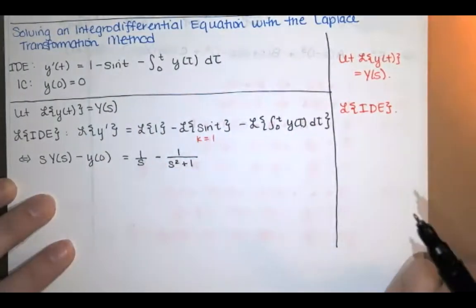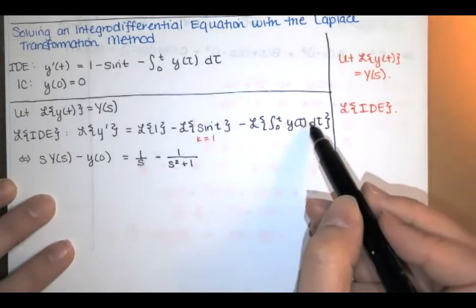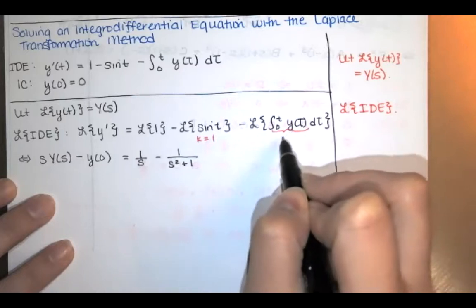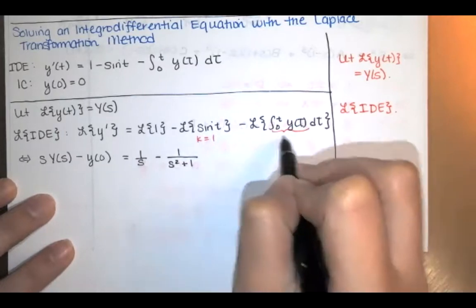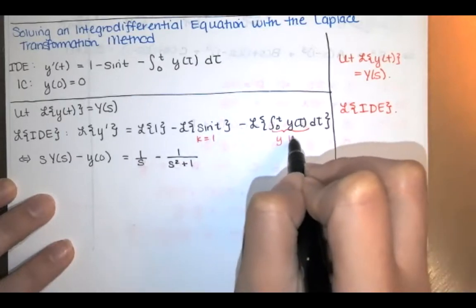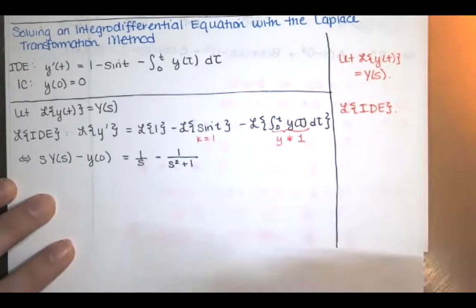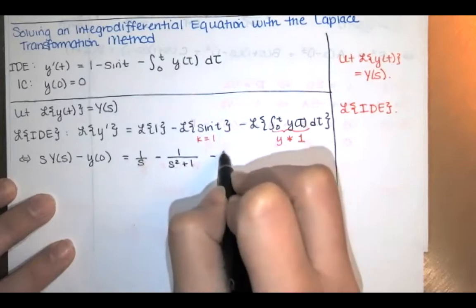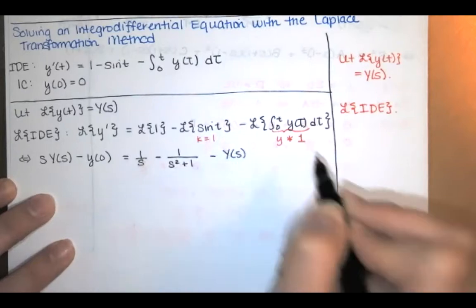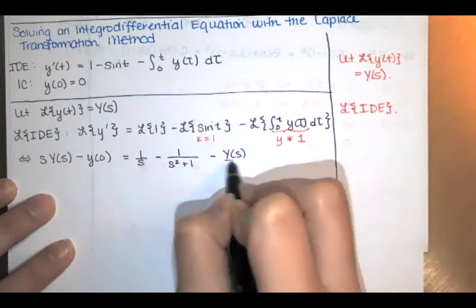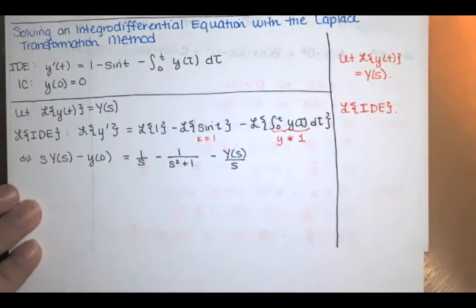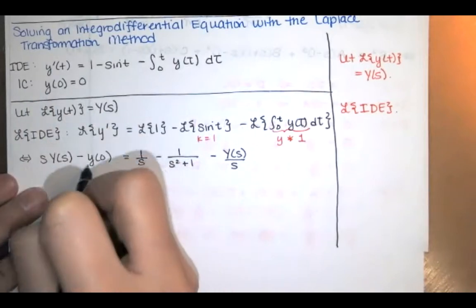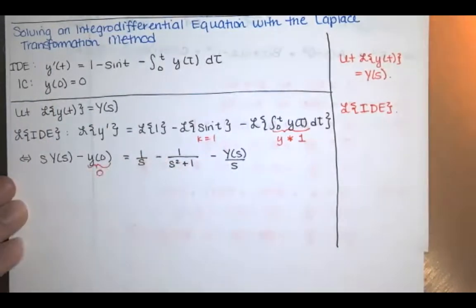Here it looks like we just have y(t) with no function g(t minus tau) multiplying it, so the other function has to be 1. This is the Laplace transform of the convolution of y with 1. The Laplace transform of a convolution is the Laplace transform of the first function times the Laplace transform of the second, giving Y(s) over s. Then we apply the initial condition y(0) equals 0.